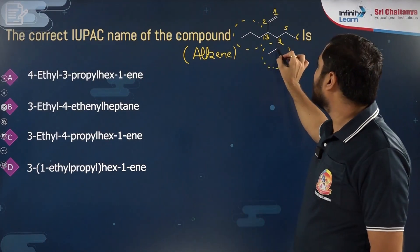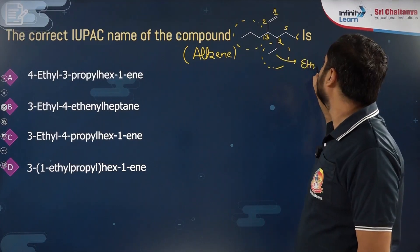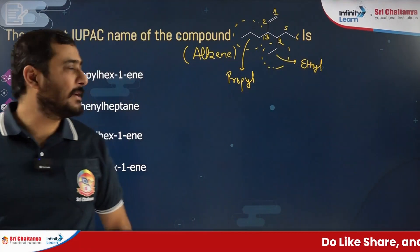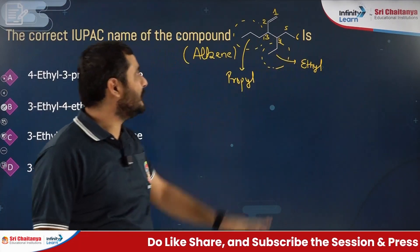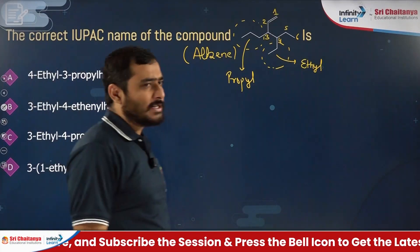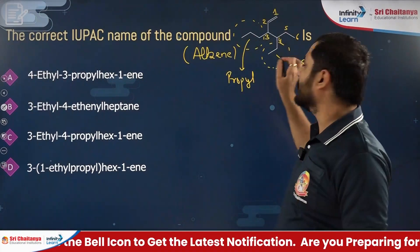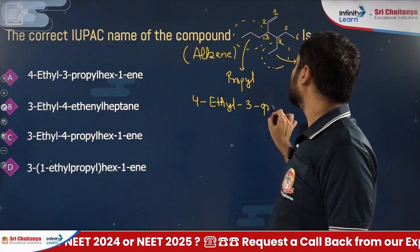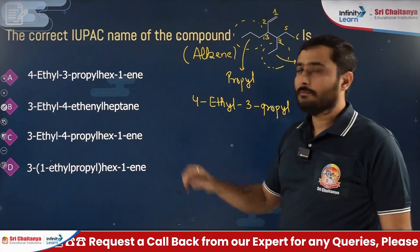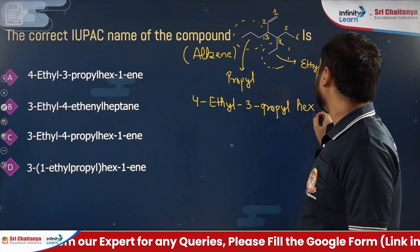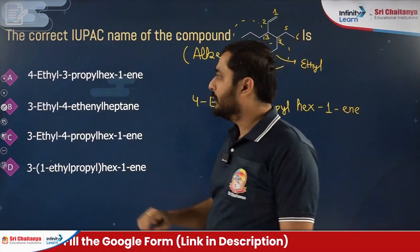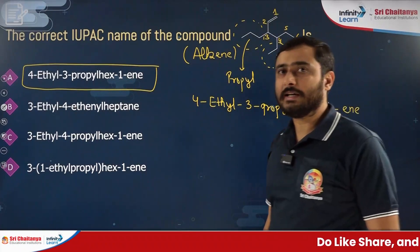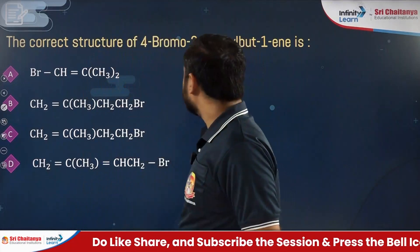The chosen parent chain has six carbon atoms with the double bond at position one. At third position, a propyl substituent is present; at fourth position, an ethyl substituent is present. Arranging alphabetically: ethyl before propyl. So the name is 4-ethyl-3-propylhex-1-ene — option A is correct.